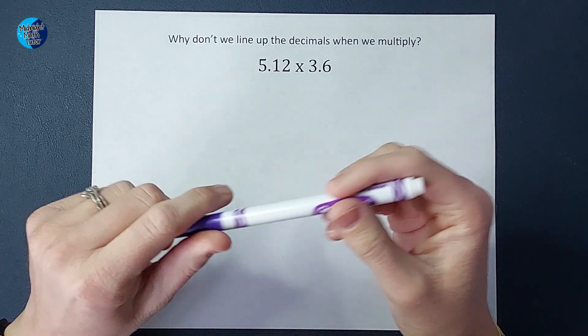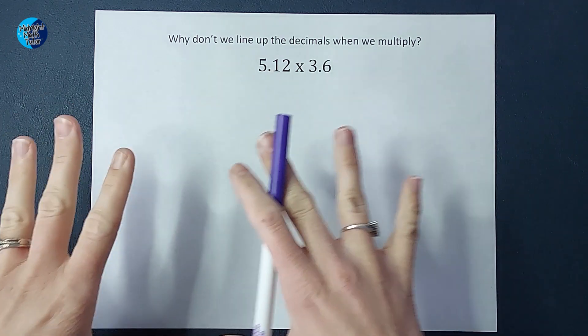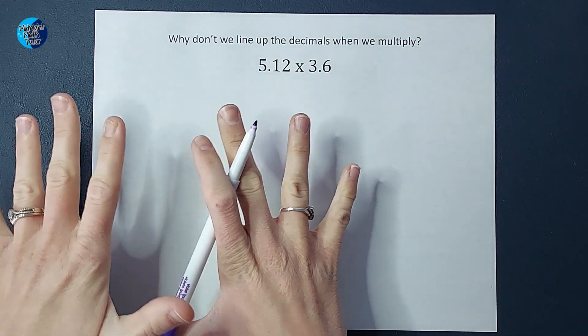And then you get to multiplication and we're like, don't worry about it, you don't need to line them up. So why is that? So first of all, we are going to multiply these just like normal.